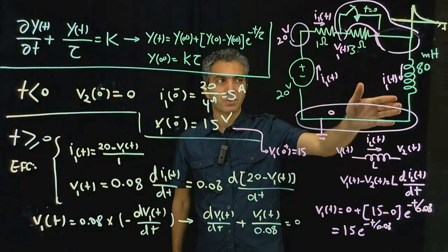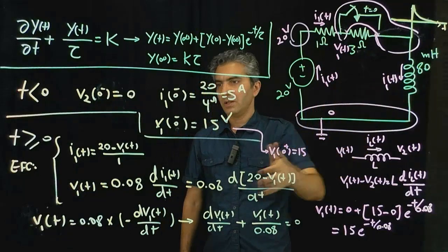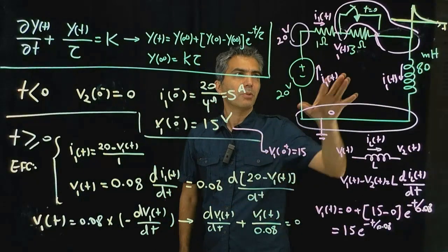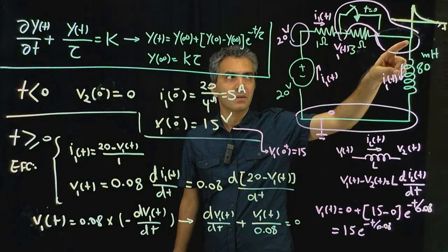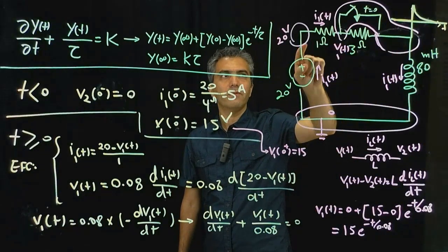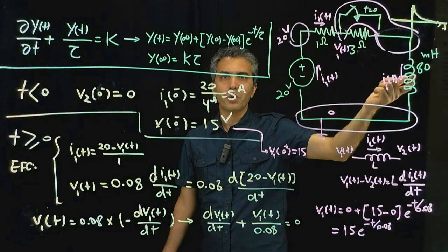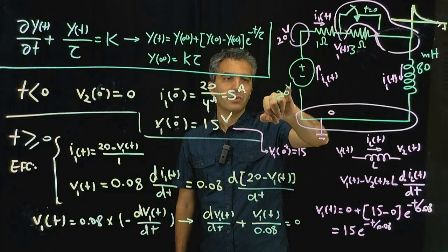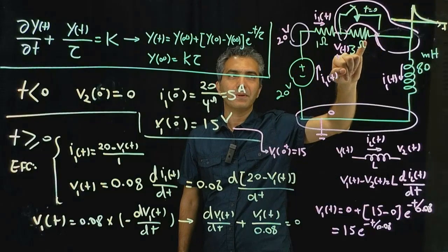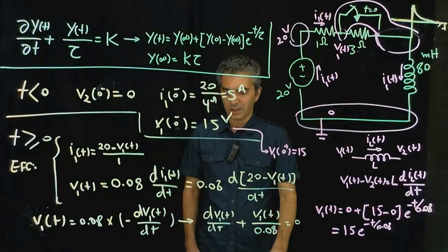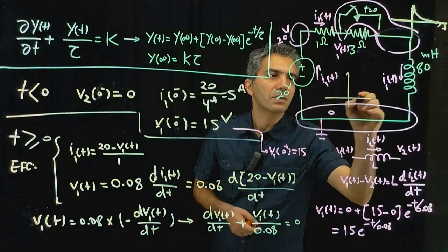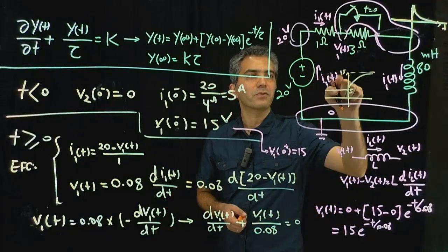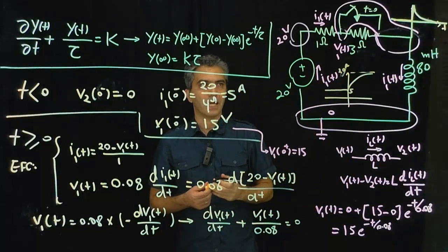The current behaves differently. Before the switch the current was 5 amps. At t equals infinity, since V1 is 0, the circuit is simply 20 volts across 1 ohm, giving 20 amps. So the current exponentially increases from 5 amps to 20 amps at t equals infinity — an increase of 15 amps.